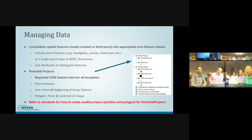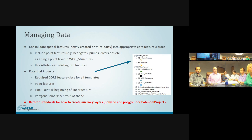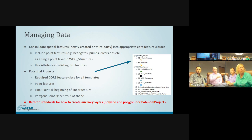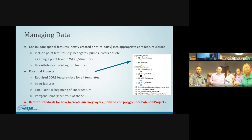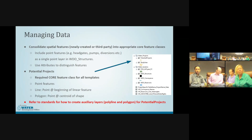When putting new and third-party data into the template, consolidate as much as possible. WDO structures is a point layer, WDO conveyance is for linears, and reservoirs is for polygons. Point features like valves, head gates, pumps, meters should all be consolidated in structures. We have 35 structure types, plus an 'other' domain — if your specific structure type isn't listed, use 'other' and explain in the comments. Tunnels, pipelines, and conveyance ditches go into conveyances. If you need additional attributes, use the linking table — do not add attributes to these layers or alter the template.